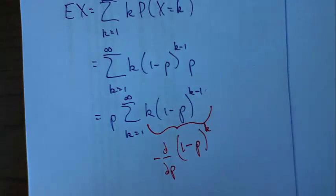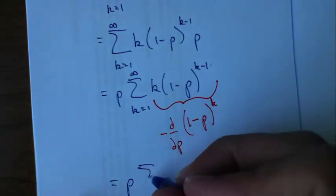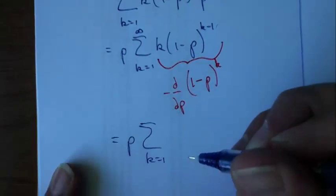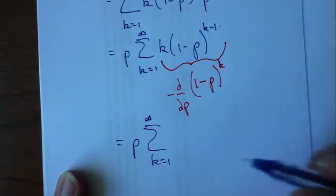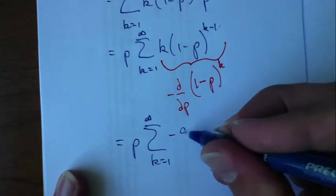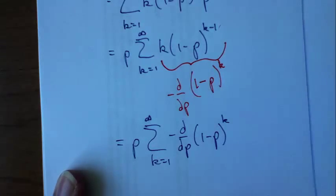So all this stuff can be expressed as exactly that. So I can say that this is the sum k goes from 1 up to infinity of negative d/dp of 1 minus p to the k. And in fact, I'm going to go ahead and pull that minus sign out, put it right there.